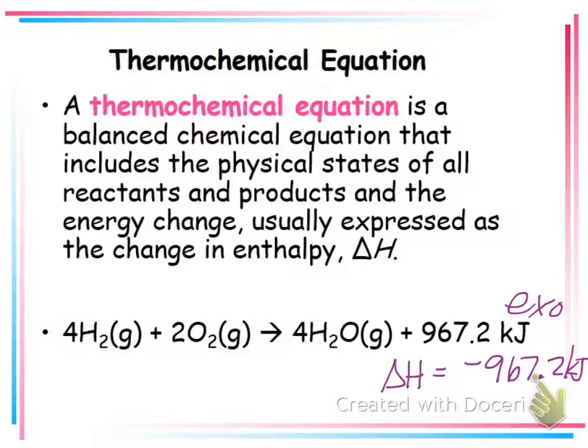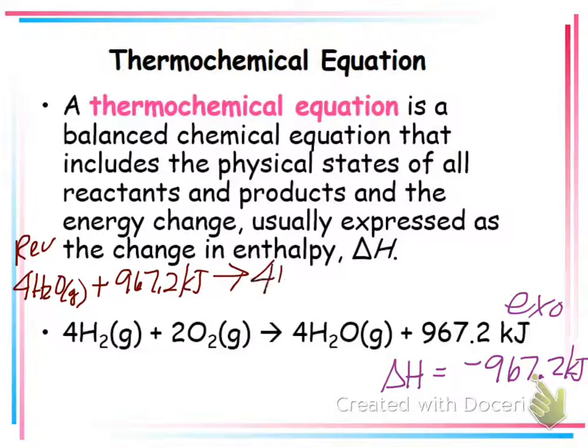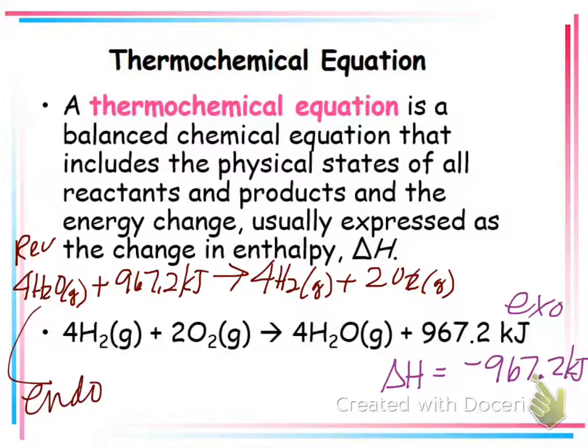And we know it's exothermic because it's appearing as a product. If I were to take this equation and reverse it, here I'm forming water. If I said, okay, what happens if I decompose water? So, I'm going to reverse it and say I have 4 water plus 967.2 kilojoules, and it's going to yield 4 hydrogen plus 2 oxygen. So, now this equation would be endothermic because I reversed it. If it's exothermic, go in one direction. If I reversed it, it's going to be endothermic. And what would the sign of delta H be here? It would be a positive 967.